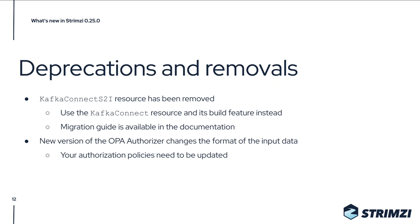There are also some deprecations and removals. The Kafka Connect S2I resource has been removed — it was already deprecated for some time. You can use the Kafka Connect resource and its build feature instead to add additional connectors to the container image. The documentation includes a complete migration guide. There's also the change in the Open Policy Agent authorizer, which as mentioned may require you to update your authorization policies to match the new input data format.